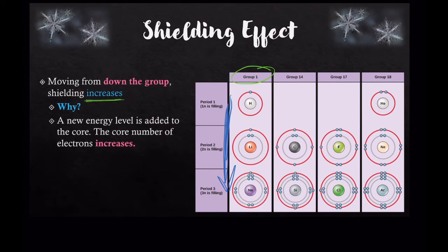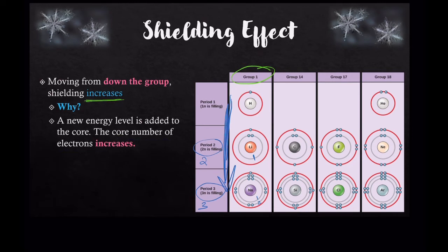Every time you go down to a new period, a new energy level is added. Period two has a total of two energy levels, and period three has a total of three energy levels. While period one has no core electrons, period two has one energy level with two core electrons on it. Period three, with sodium, has two core energy levels with electrons on it. So as you move down a group, the core number of electrons increases, and the shielding effect also increases.